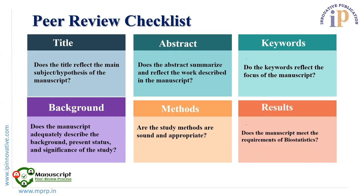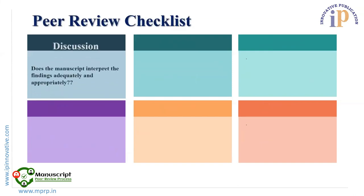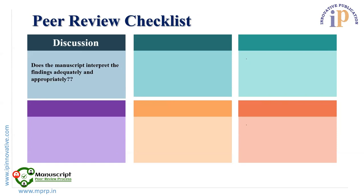Results: Are the research objectives achieved by the experiments used in the study? Does the manuscript meet the requirements of biostatistics and other results components? Discussion: Does the manuscript interpret the findings adequately and appropriately, highlighting key points concisely, clearly, and logically? Does it discuss the paper's significance and relevance to clinical practices sufficiently?